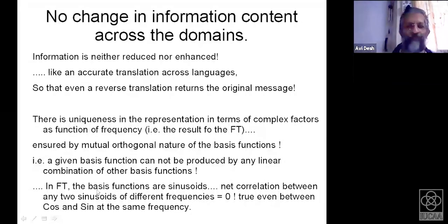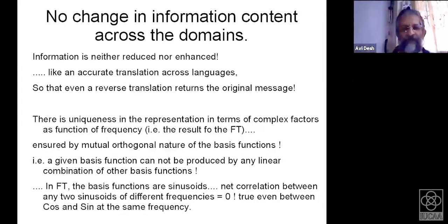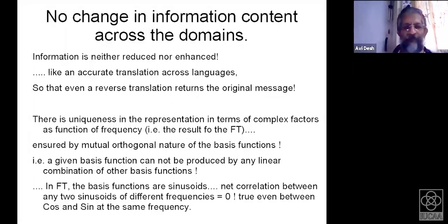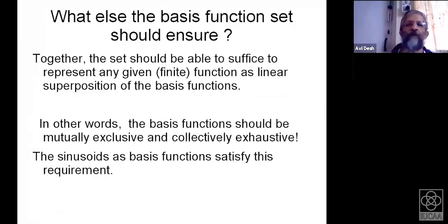In the Fourier transform, the basis functions are sinusoids, and the net correlation between any two sinusoids of different frequencies must be zero. If you take one sinusoid and multiply it by another of different frequency, you can write the product as the sum frequency and the difference frequency. When integrated from minus infinity to plus infinity, both give net value zero. It is only when the frequencies match — when the difference is zero — that there is a non-zero correlation. This is also true between sine and cosine functions at the same frequency.